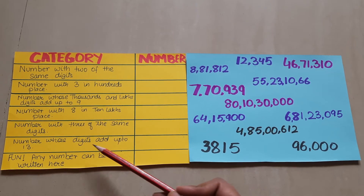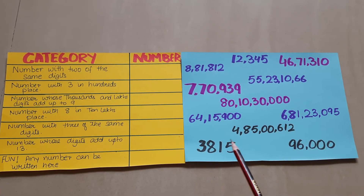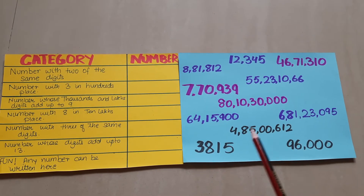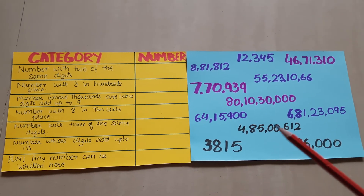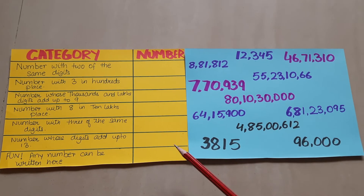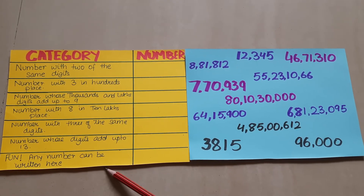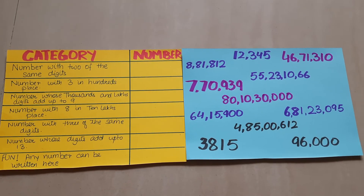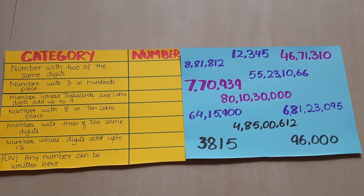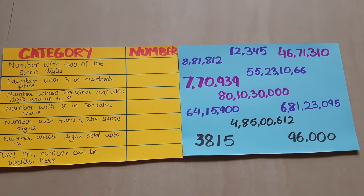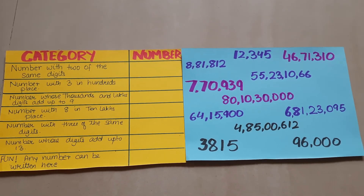Similarly, there are more options. One clue is 'number whose digits add up to 13' — you add each digit of the number and check whether it sums to 13, then write that number down. The last one is a fun one where any number can be written. So these were three simple and basic activities for the place value system which you can revise, enjoy, and use to make your concept of number system even clearer. Bye!